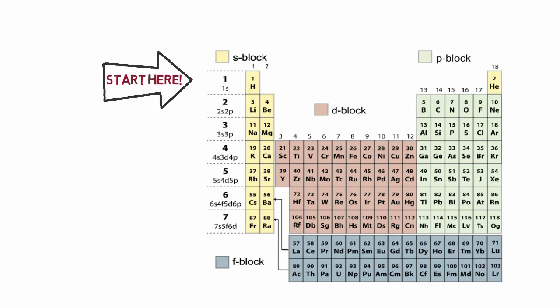When you arrive at the D and F blocks, subtract 1 from the n value for the D orbitals and 2 from the n value for the F orbitals. This periodic table has the electron configuration for each row written along the left-hand side using the method just outlined.